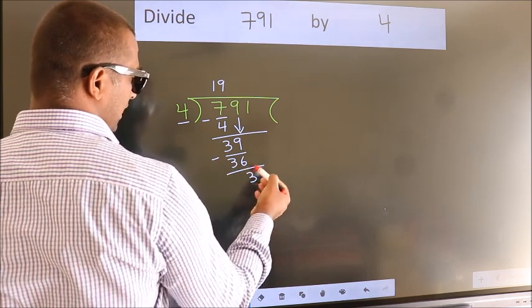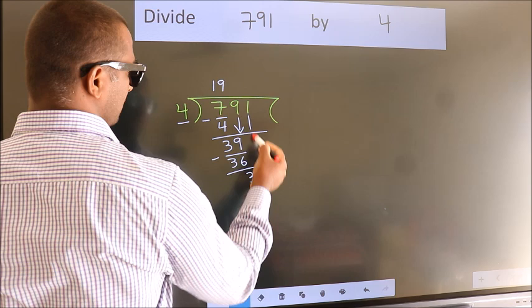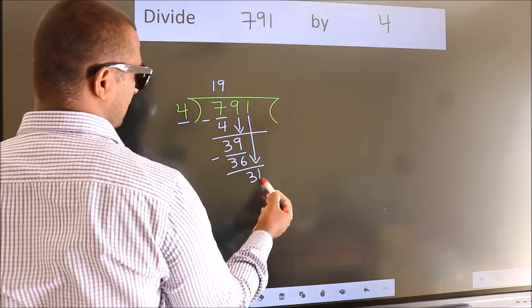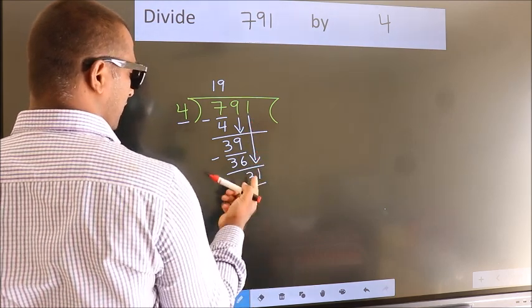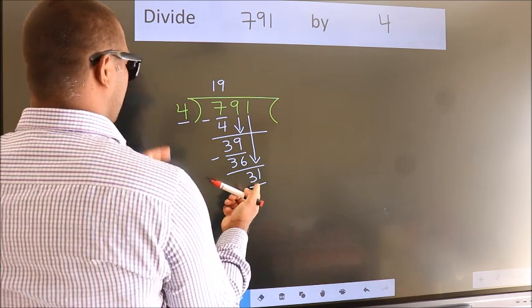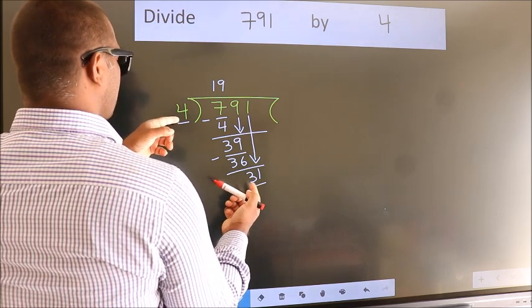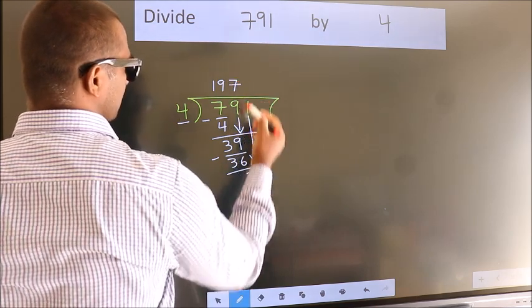After this, bring down the beside number, so 1 down. So 31. A number close to 31 in the 4 table is 4 sevens, 28.